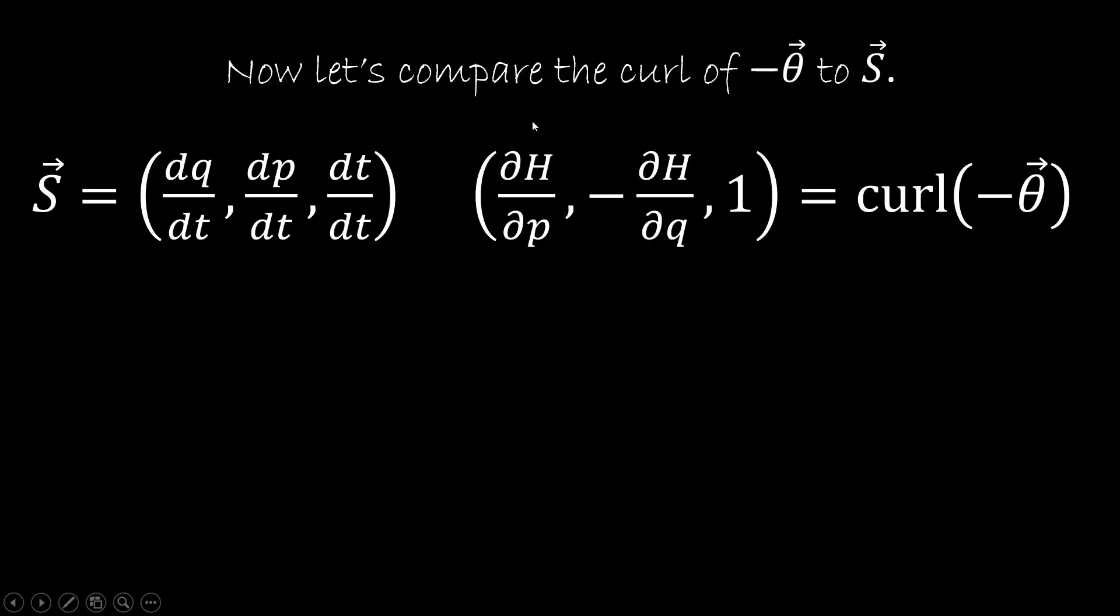So now let's compare the components of the curves of minus theta to the components of S. We have dQ/dt and partial derivative of H in respect to P. Well, because of Hamilton's equation, this is equal to this. Then we have dP/dt and minus the derivative of H in Q. Well, again, for the Hamilton's equation, these two terms are the same. And then we have dT in time is equal to 1, and this is always true.